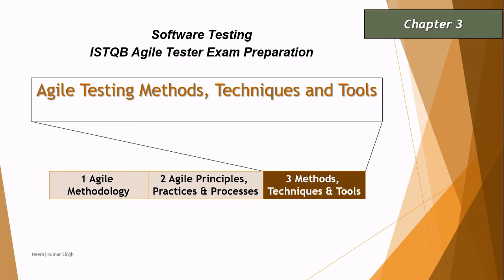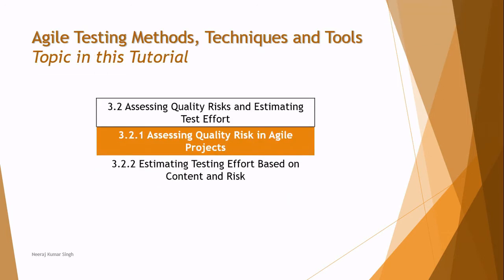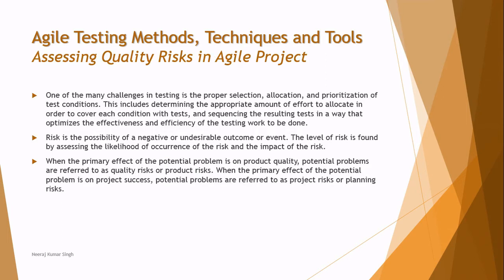Hello everyone, greetings for the day. Welcome back to another Agile Tester Certification tutorial. We are in chapter 3, and we just completed 3.1. We are looking at the next topic, 3.2, which has two subtopics: assessing quality risk in agile projects, and estimating testing effort based on content and risk. In this tutorial, we'll be talking about the first one — how to assess quality risk in agile projects.